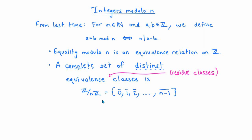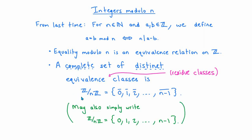We also refer to this as Z mod nZ for reasons which will become clear in later videos. In not too long we're going to drop the bar notation and simply write Z mod nZ as the set {0, 1, 2, ..., n minus 1}, with the understanding that each element of this set represents an equivalence class of integers modulo n. For the beginning part of this video though we'll keep the bars on just to reinforce that understanding.